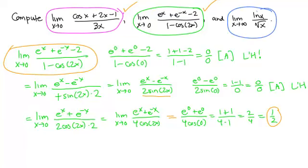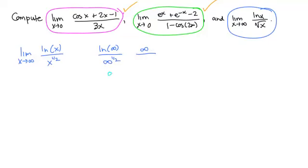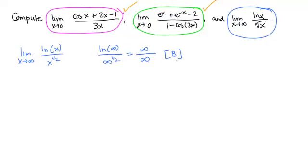For the limit as x→∞ of ln(x)/√x, rewritten as ln(x)/x^(1/2). Plugging in formally: ln(∞) = ∞ and ∞^(1/2) = ∞, so this is ∞/∞—a Type A indeterminate form. Applying L'Hôpital's rule, we replace the top with its derivative 1/x and the bottom with (1/2)x^(−1/2).